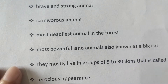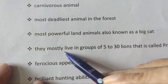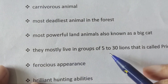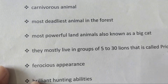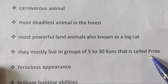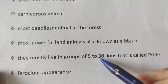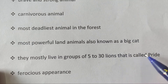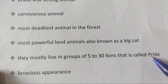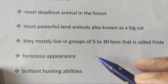Moreover, you can say they mostly live in a group of 5 to 30 lions, and that group is called a 'pride.' So the group of lions — ranging from five to thirty — is referred to as a pride.